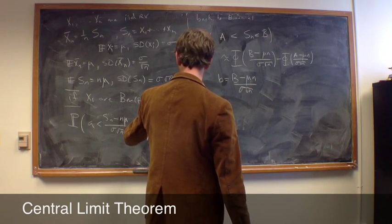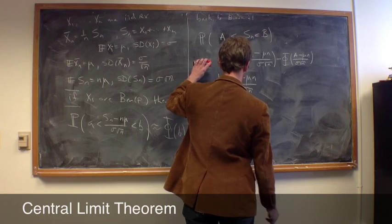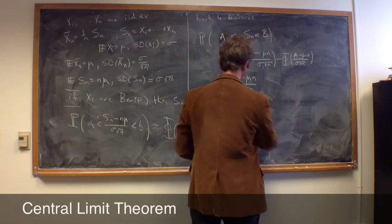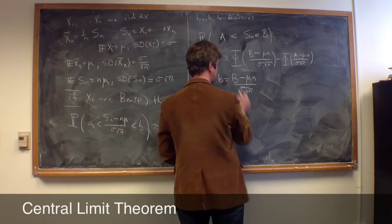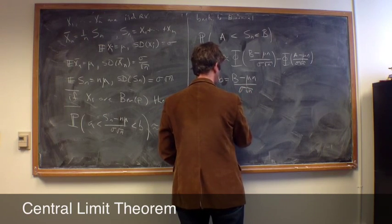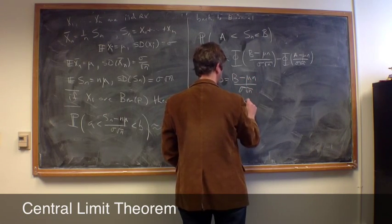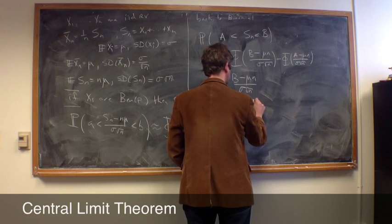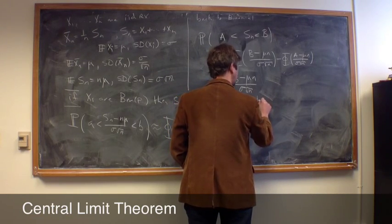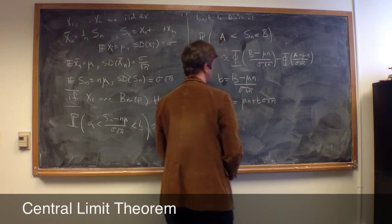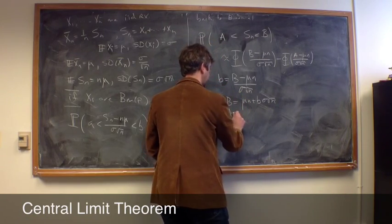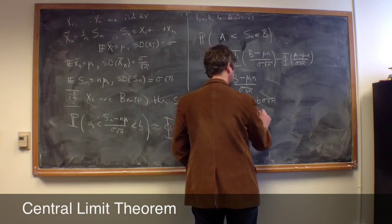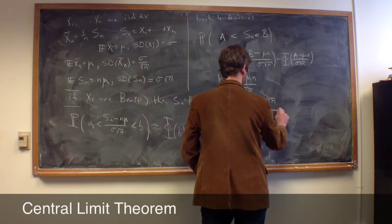if we, so actually, I want to do something slightly, no, that's the right thing to say, so now we can solve for what B would be in terms of this, so then B would be, B is equal to what? It's equal to mu n plus b times sigma square root of n, and similarly, A will be mu n minus a sigma square root of n,